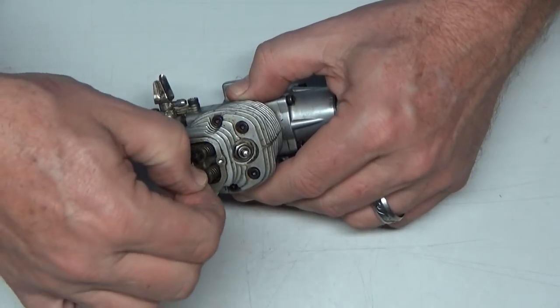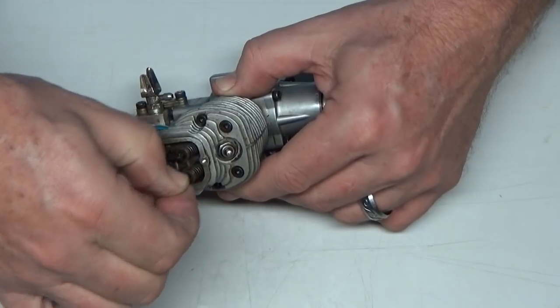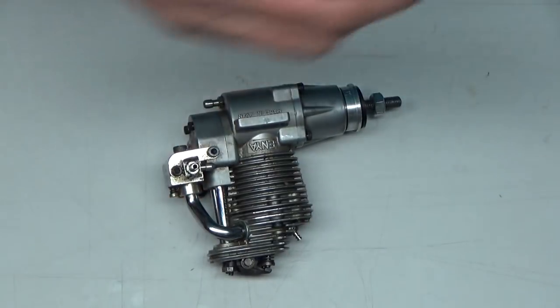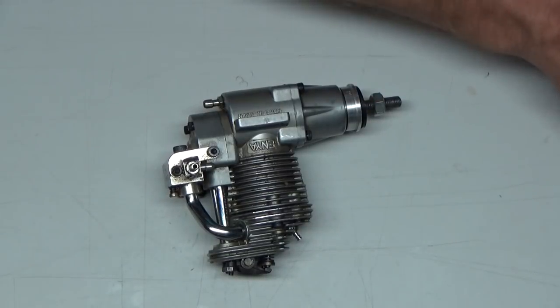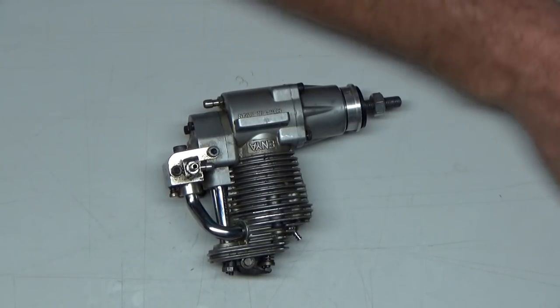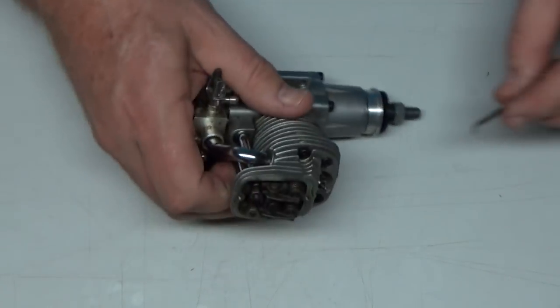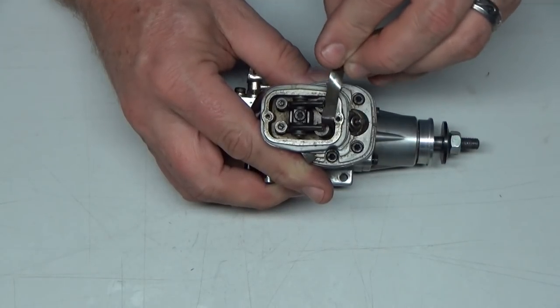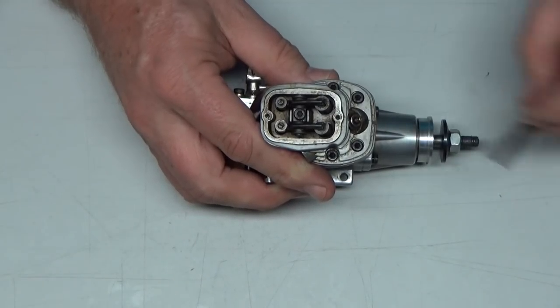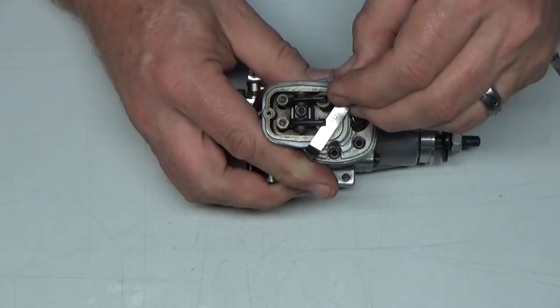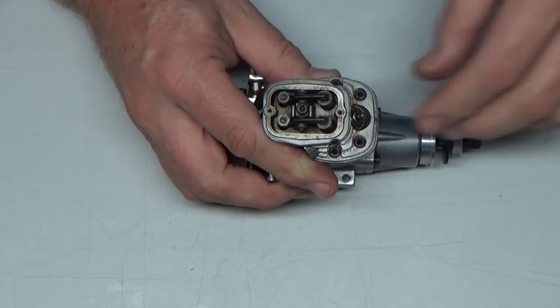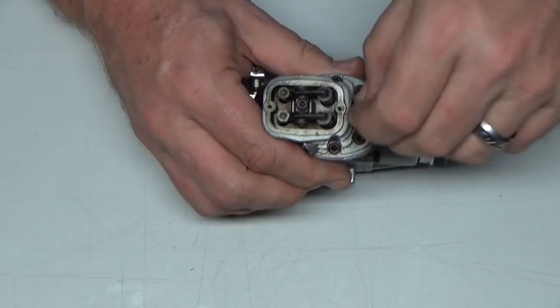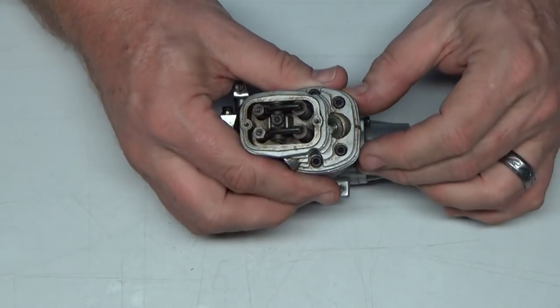The valve lash feels a little tight. I think I feel a little bit of movement in the exhaust, but I don't know, let me get my gauges out real quick here. So here's my go gauge. Intake valve is too tight, exhaust valve is perfect. Intake valve is too tight. Piston is at top dead center, so I know I'm in the right area.